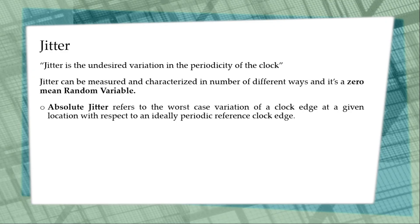Consider a clock edge: assume this is the ideal edge, but there will be variations — the clock edge may occur earlier or later than expected. The worst-case variation of this clock edge with respect to the reference, on both sides, is called absolute jitter.